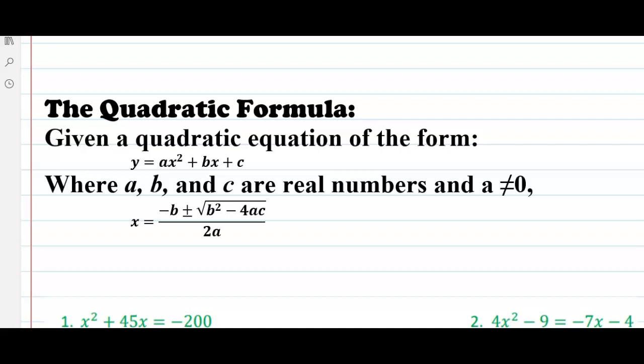you can simply take the opposite of b, add or subtract the square root of b squared minus the product of 4a and c, and divide that by twice a, and you will get two answers.